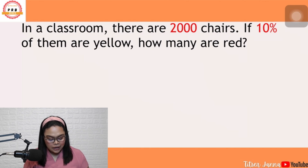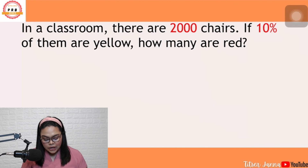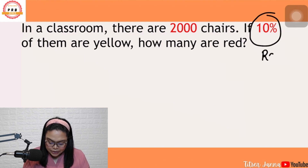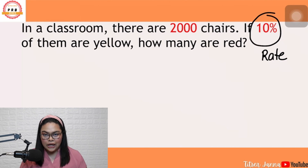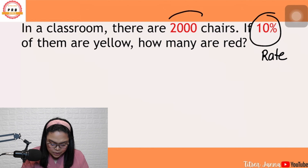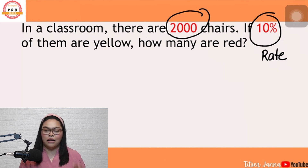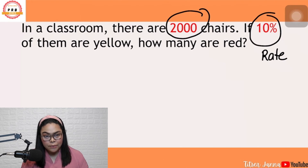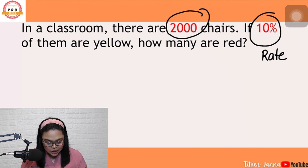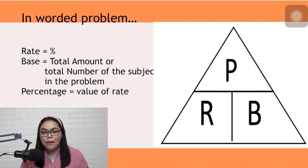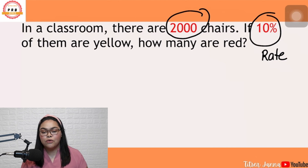Dito sa problem na to, it says that in a classroom there are 2,000 chairs. If 10% of them are yellow, how many are red? Agad-agad makikita nyo yung familiar na number dito which is the rate — 10%. We consider that as the rate. Ngayon, ang tanong na lang is kung itong number na 2,000 ay percentage ba or the base? Base is the total amount or total number of the subject in the problem — yung kabuang numero or amount kung ano yung pinag-uusapan sa problem.